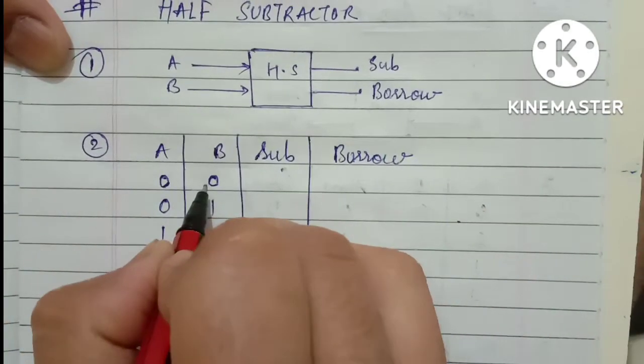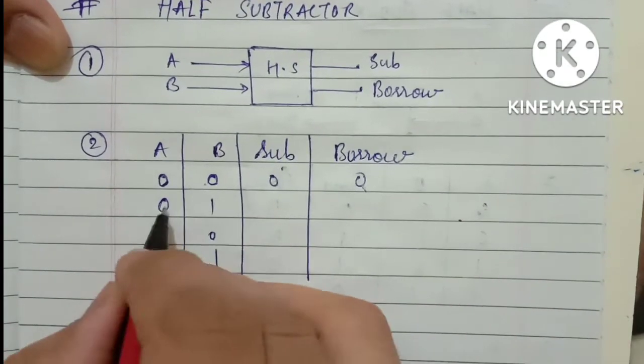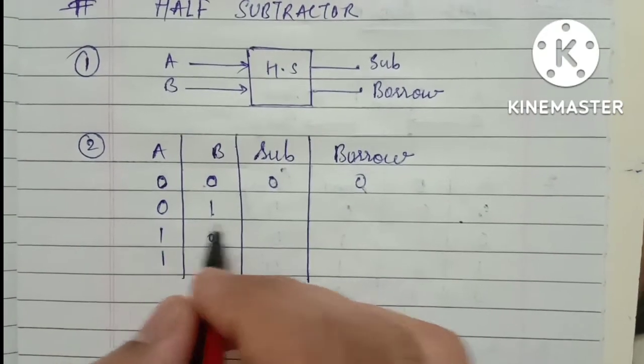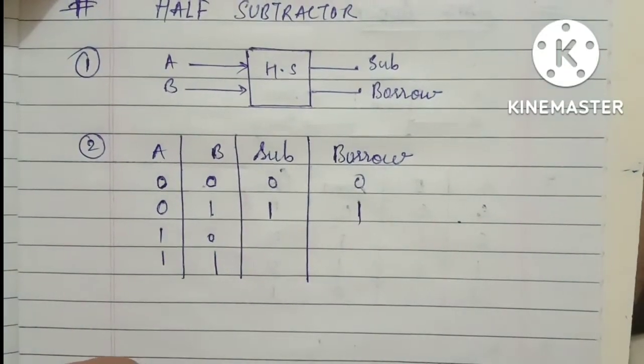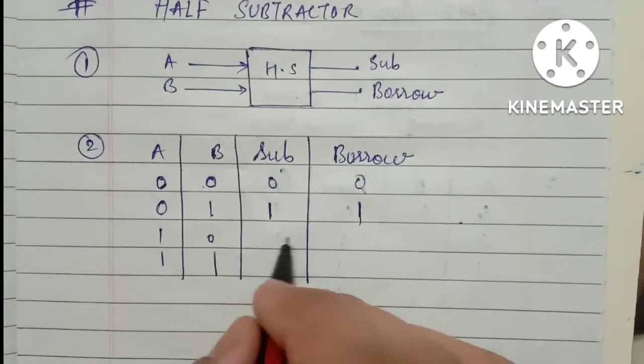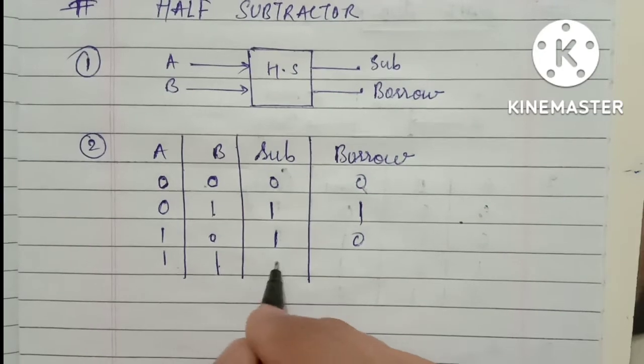Zero minus zero is zero only, no borrow. Zero minus one, not happening. So you need to borrow. In this case, one will be the difference only, but you have to take one borrow also. One minus zero is one only, no borrow. One minus one is zero.